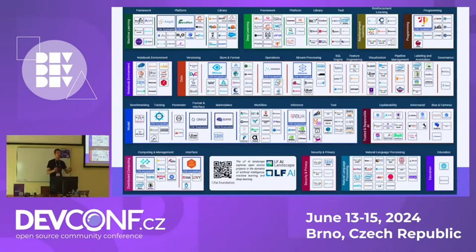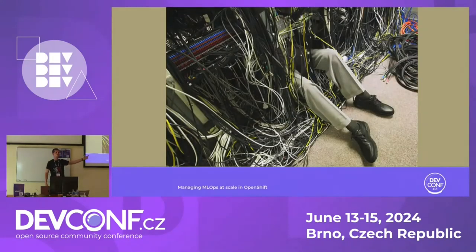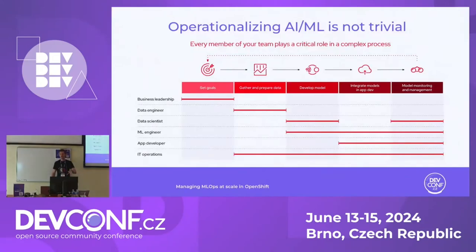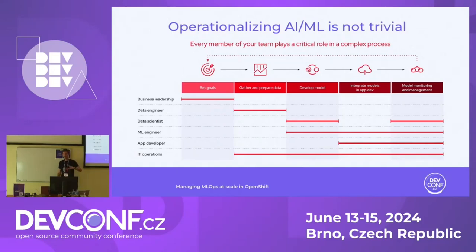The manager is super excited, has read a lot of Forbes and Medium articles, and wants to add every single piece of tech and generative AI straight away — adding more and more complexity until we're in a mess with no control at all. One key takeaway: doing MLOps and putting models in production is not trivial. Every member of your team plays a critical role, from business leadership to data engineers and ML engineers, each with different goals throughout the process of gathering data, developing, fine-tuning, deploying, and monitoring models.